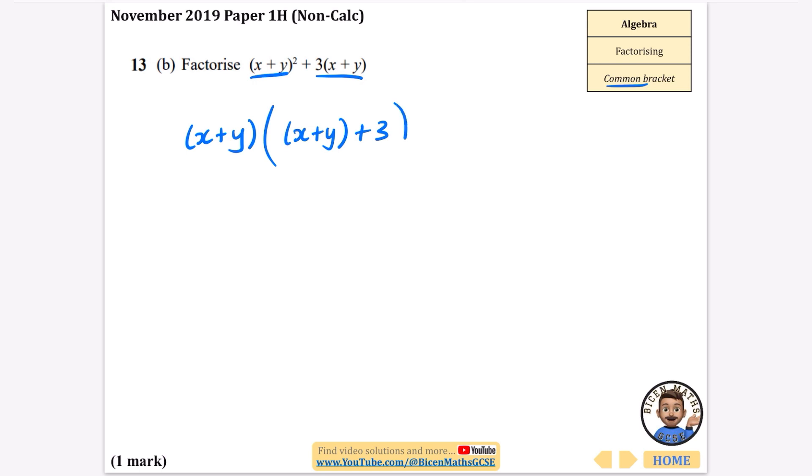And then what do I multiply x plus y by to get three brackets x plus y? Well, you just multiply it by three. So there it is factorized, but I would probably write it like this: x plus y times x plus y plus three. Bit of a weird one, this kind of common bracket sort of thing, but there we have the answer that we need and it's only a one marker.